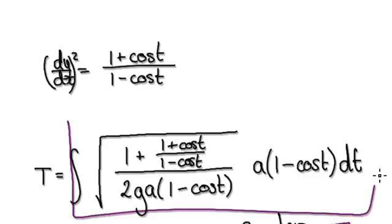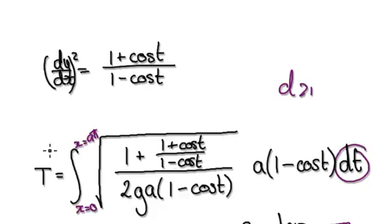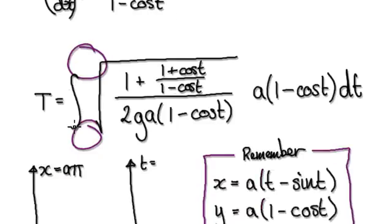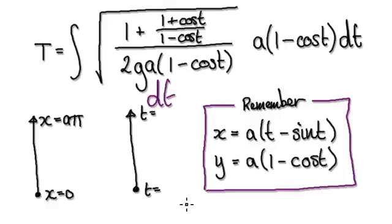So now we need to evaluate this. But earlier, when we were in the dx realm, we were integrating from x equals zero to x equals a·pi. But now we're in the dt realm, so we need to make the adjustments here and figure out the limits.